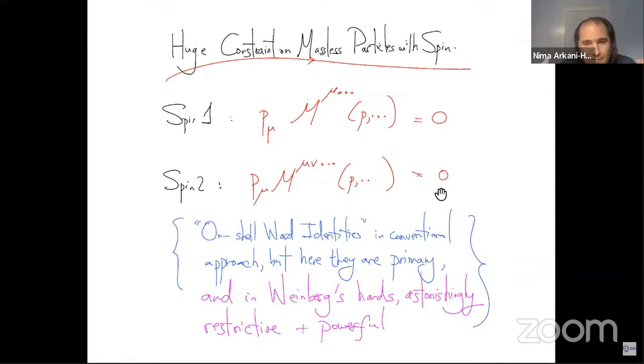And from the conventional approach, these are the onshore ward identities, but in the conventional textbook way of thinking about these, these come out pretty late in the development from this point of view. They're primary because they're what's necessary in order to make sure that despite appearances. The amplitudes are actually physically Lorentz invariant. The MU news are good Lorentz tensors, but the polarization vectors are not only these equivalence back classes are Lorentz invariant objects and so this is what's necessary in order to consistently describe the reduced number of degrees of freedom for massless particles to spin.